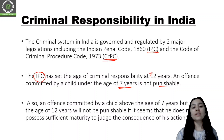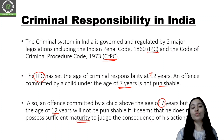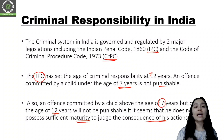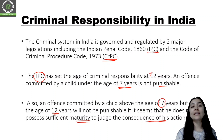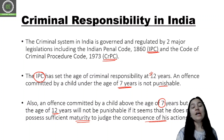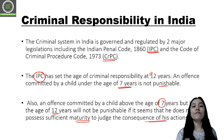Also, an offence committed by a child above the age of 7 but below the age of 12 will not be punishable if it seems that the child does not possess sufficient maturity to judge the consequences of his actions. So if we think the child cannot understand the severity of the act and how bad the consequences can be, then we do not punish them — this provision applies for the 7 to 12 years age range.